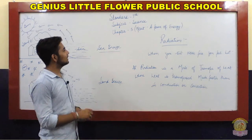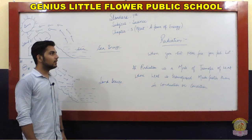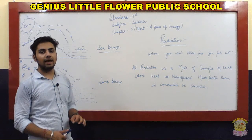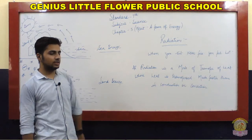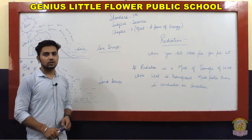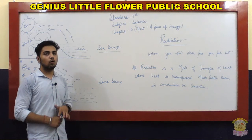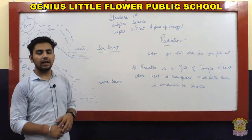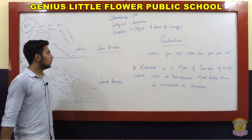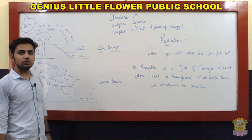Hello Class 7, welcome back. We were doing Chapter 5 which is 'Heat: A Form of Energy.' In our previous lecture we covered many uses of convection currents. Convection is the transfer of heat through the actual movement of molecules from one place to another.